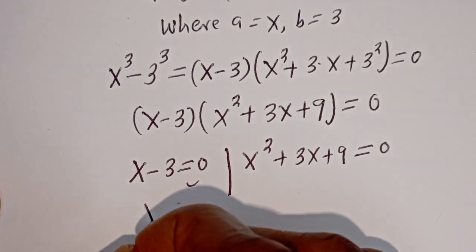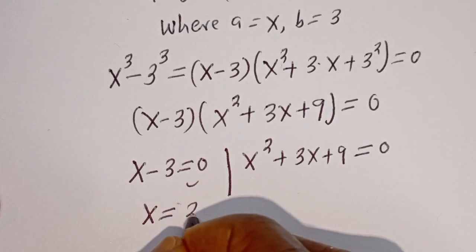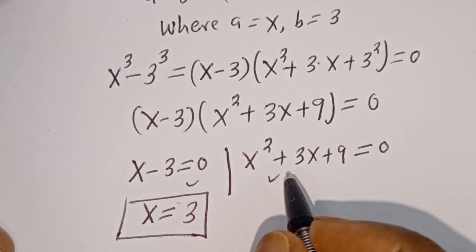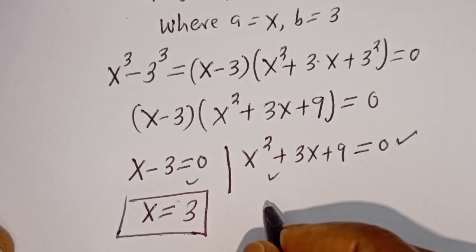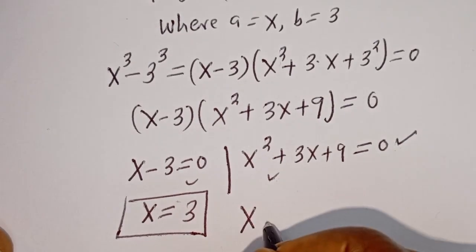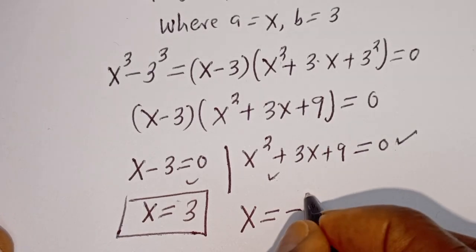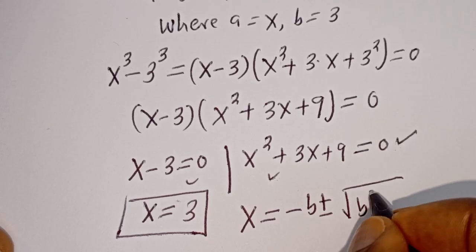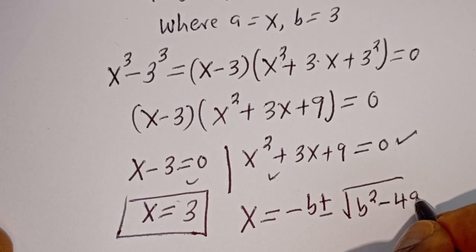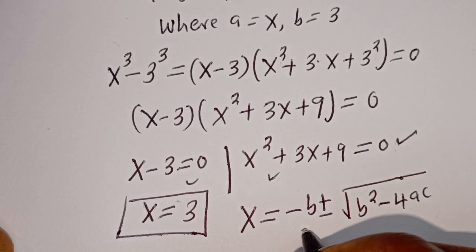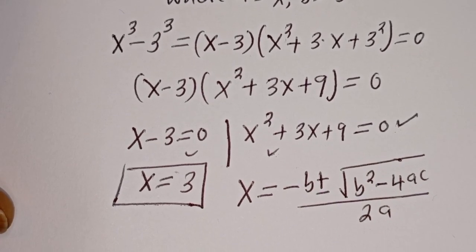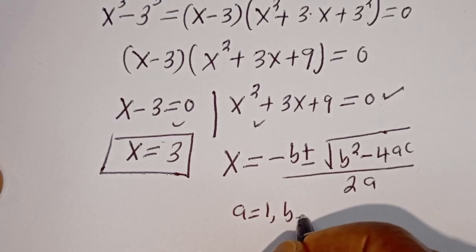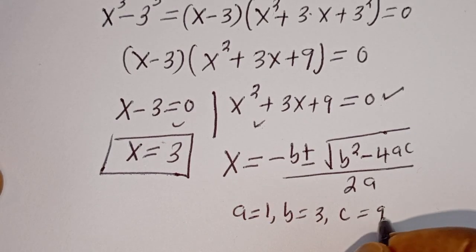From the first case, s is equal to 3. This is the first value of s. From the second case, we can solve using the quadratic general formula because this is a quadratic equation. The quadratic general formula is s equals minus b plus or minus square root of b squared minus 4ac, divided by 2a. From this equation, a is equal to 1, b equal to 3, c equal to 9.